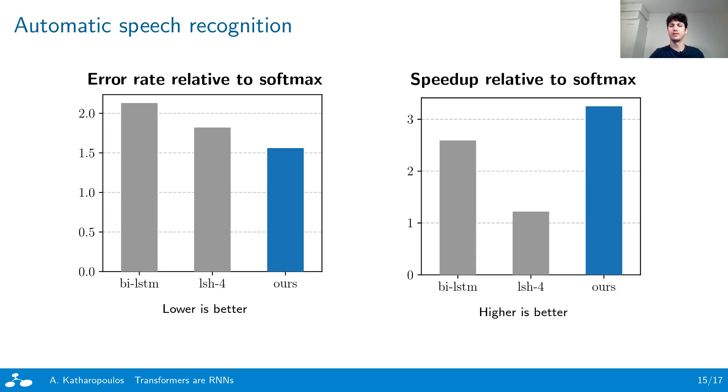We visualize the error rate relative to the softmax transformer on the left side and the speedup on the right side. We observe that all methods achieve a higher error rate than softmax transformer. However, our method performs significantly better in comparison to both Reformer and the bidirectional LSTM baseline.